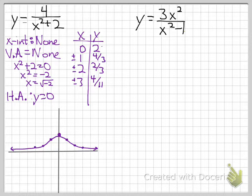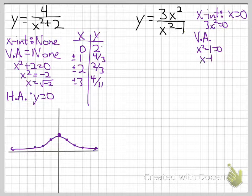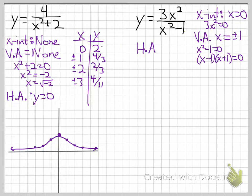For the last example, we have 3x squared over x squared minus 1. The x-intercept comes from 3x squared equals 0, giving x equals 0. For vertical asymptotes, x squared minus 1 equals 0 factors as (x minus 1)(x plus 1) equals 0, giving vertical asymptotes at x equals plus or minus 1. Since both numerator and denominator are degree 2, the horizontal asymptote is y equals 3 over 1, or just y equals 3.